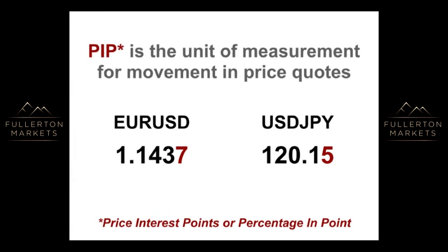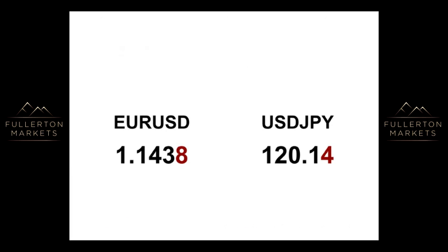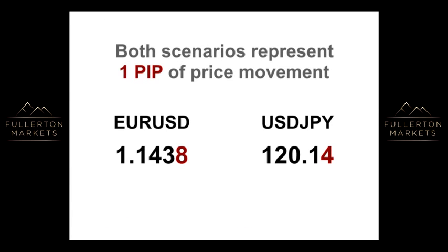A PIP is the unit of measurement for movement in price quotes. The EURUSD could move up from 1.1437 to 1.1438, or the USDJPY could move down from 120.15 to 120.14. Both scenarios represent 1 PIP of price movement.